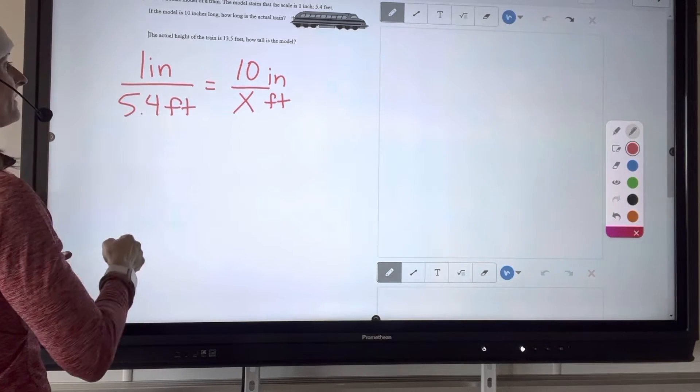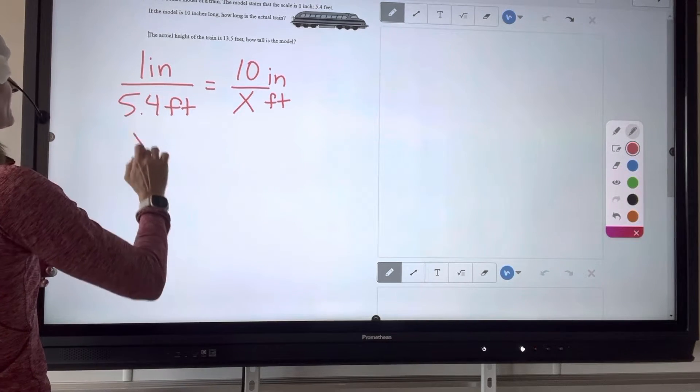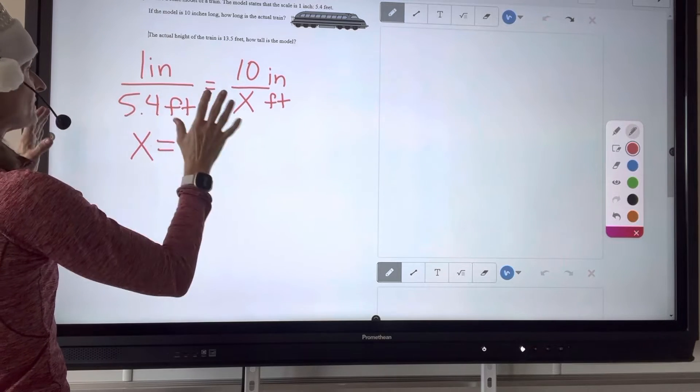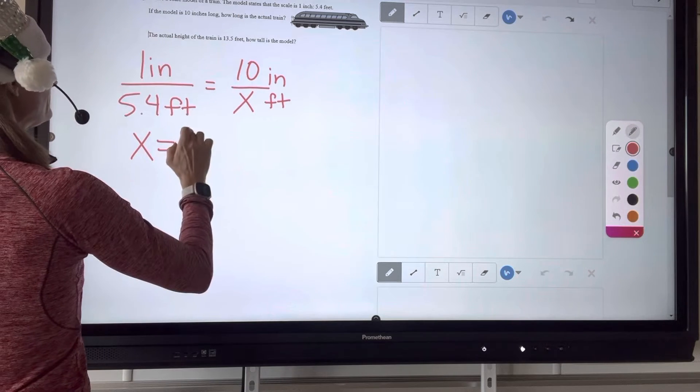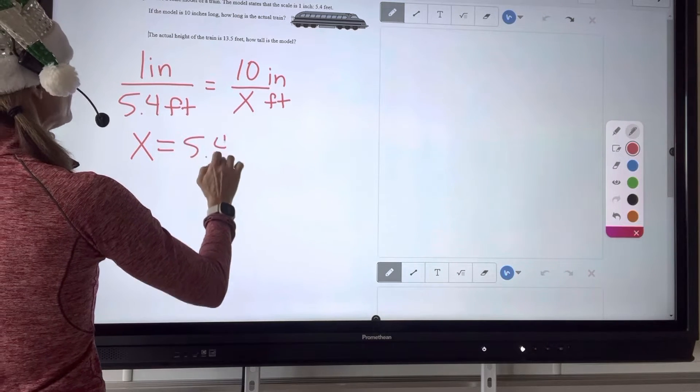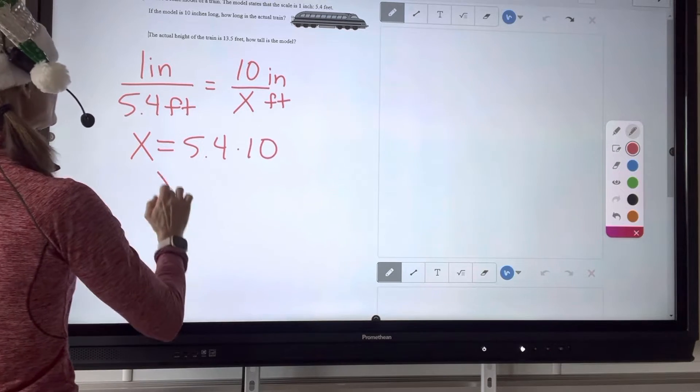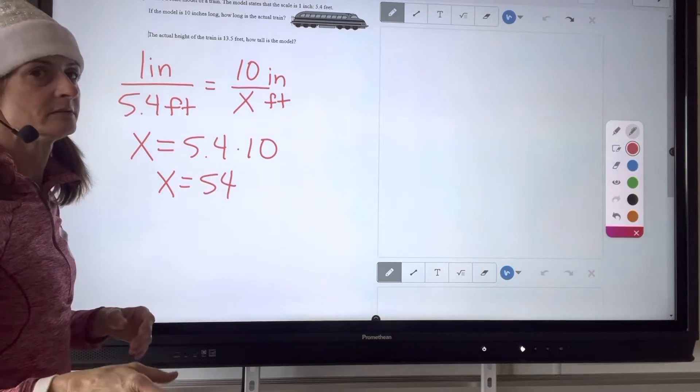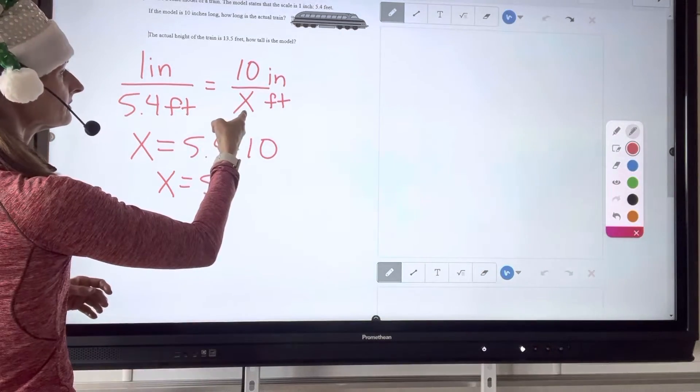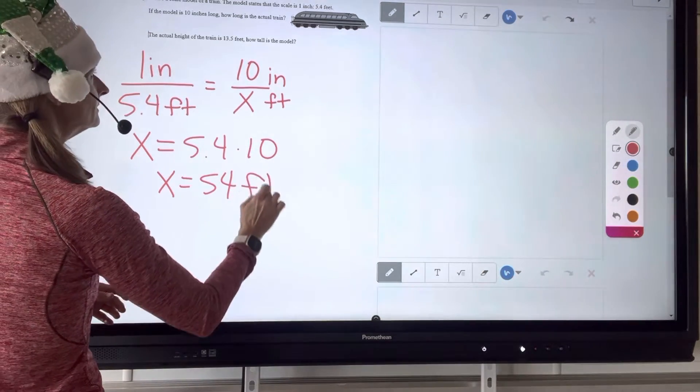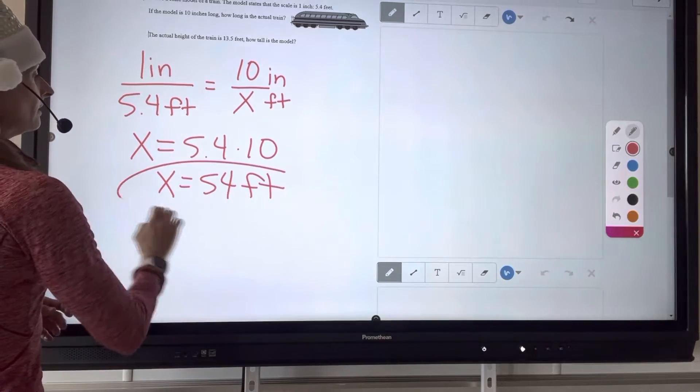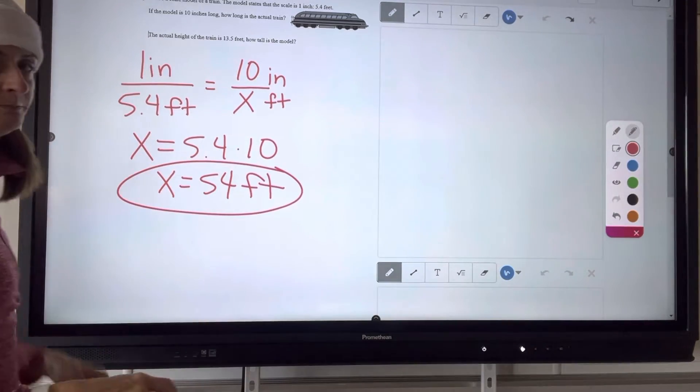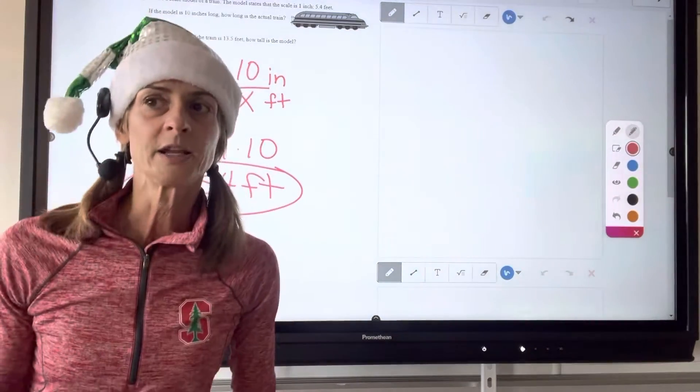So we cross multiply, we do the butterfly method. X times 1 is just X. And don't worry about the units. 5.4 times 10 is, I'll just write it, 5.4 times 10. So I'm getting X is 54. And that's 54 what? Feet. There you go. Can't forget the units. Any questions on that?